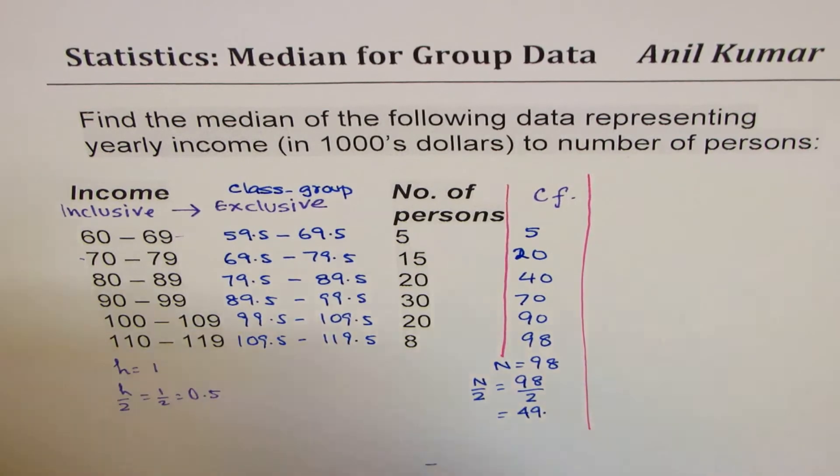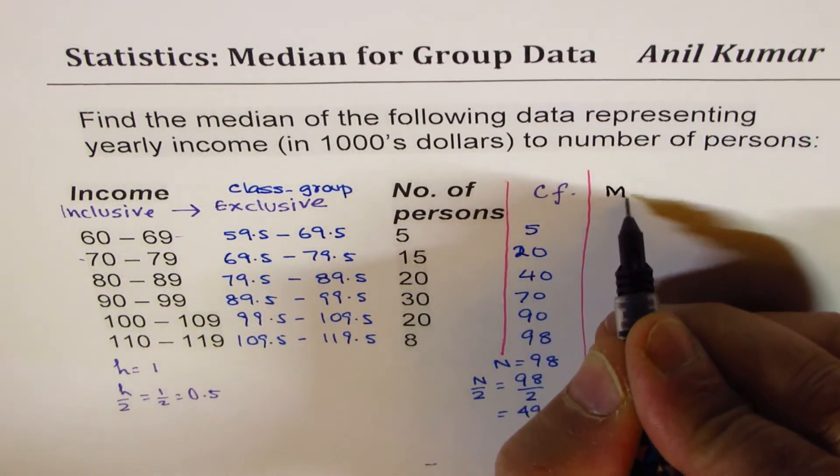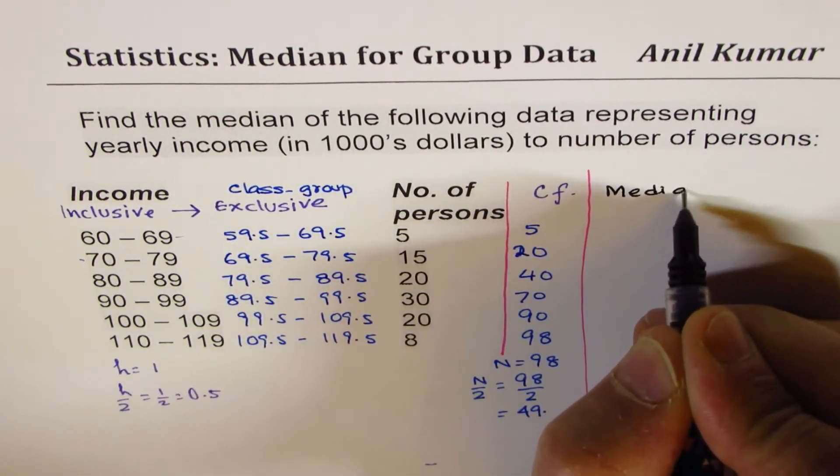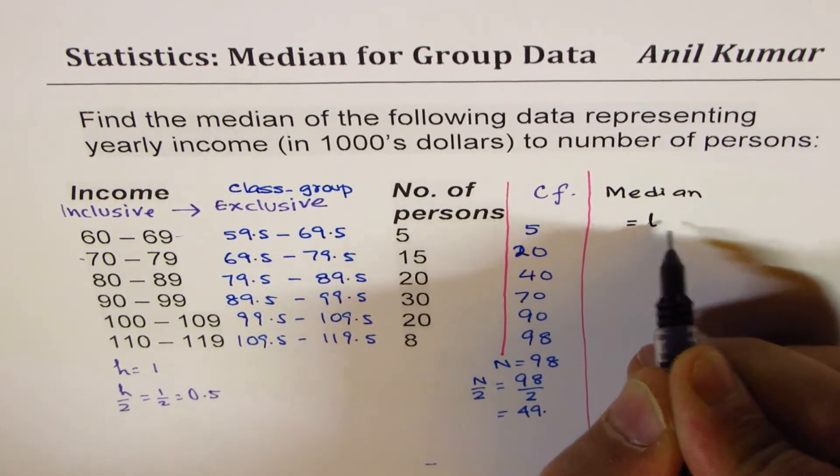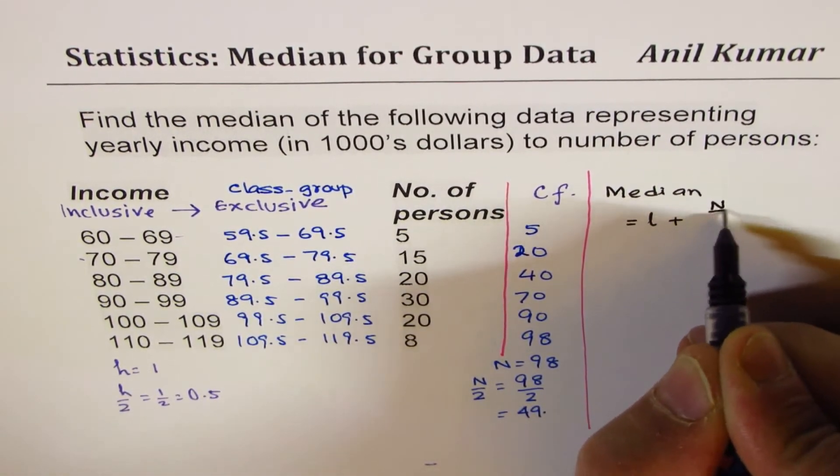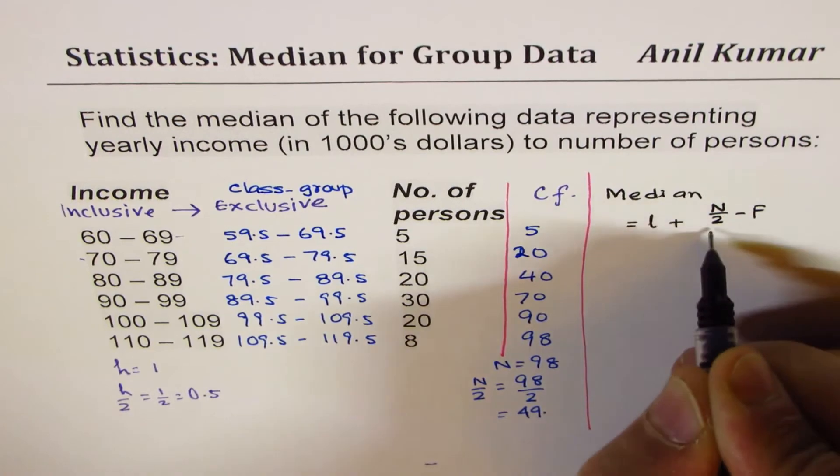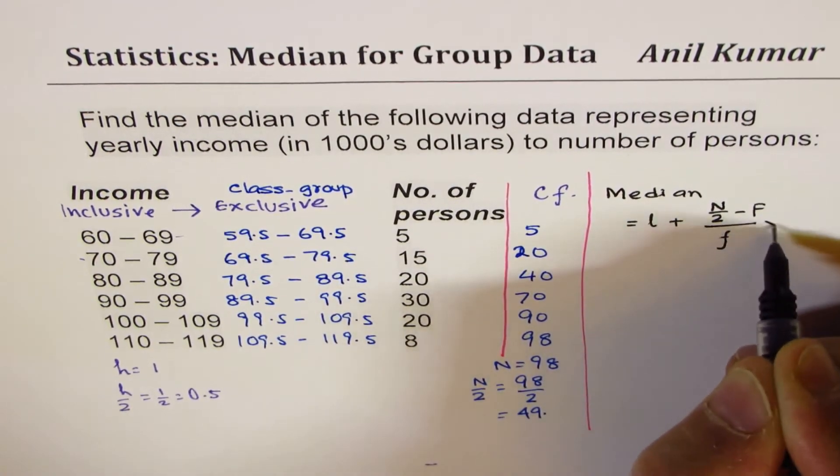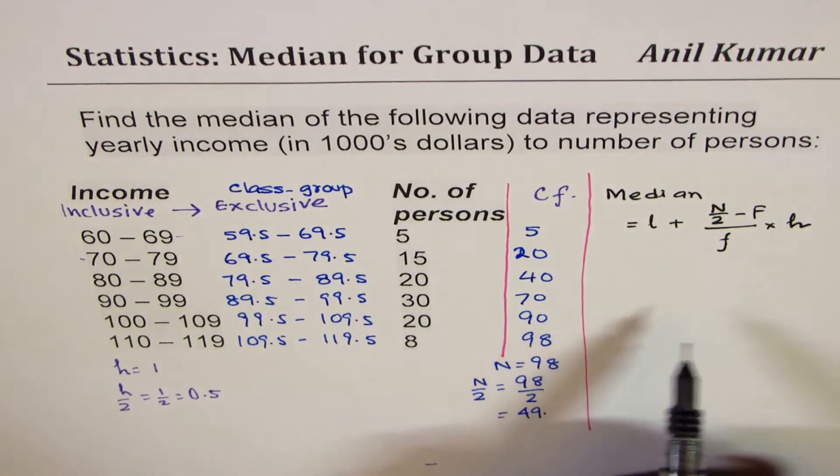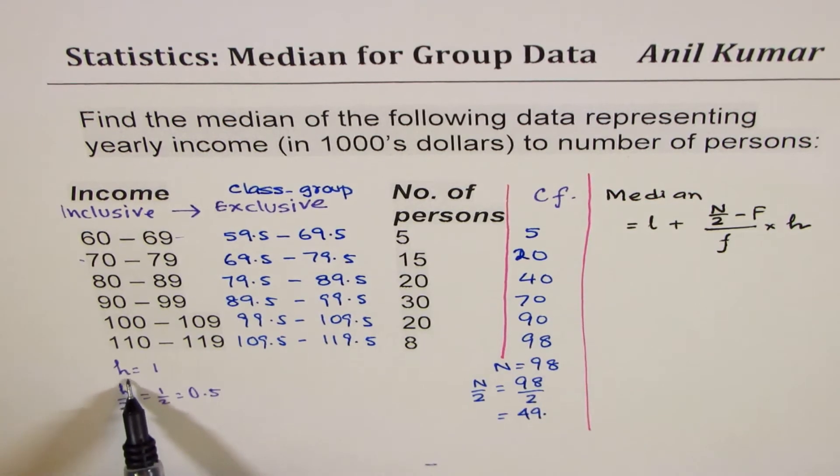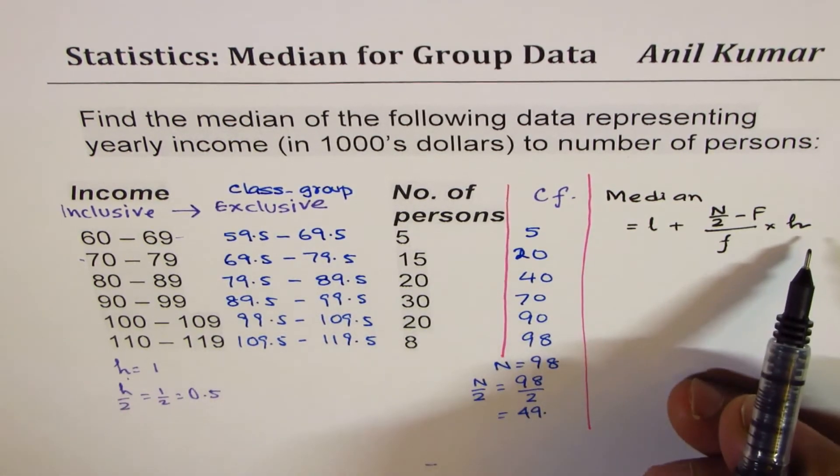Median equals L plus n by 2 minus f divided by F times h. Don't confuse this h with what I used here. This is the class interval.